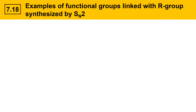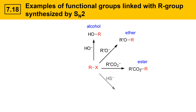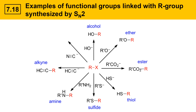Here's a series of examples of different functional groups linked with R groups that you can synthesize using the SN2 reaction. If you start with an alkyl halide and use a hydroxide nucleophile, O⁻ attacks the R group, displaces the X group, and generates an alcohol. If you change the nucleophile, you change the functional group: an alkoxide nucleophile leads to an ether; a carboxylate nucleophile generates an ester; a sulfur nucleophile gives a thiol; another sulfur nucleophile gives a sulfide; a nitrogen nucleophile gives an amine; an acetylide nucleophile gives an alkyne (a carbon-carbon triple bond); and a cyanide nucleophile, CN⁻, gives a nitrile.